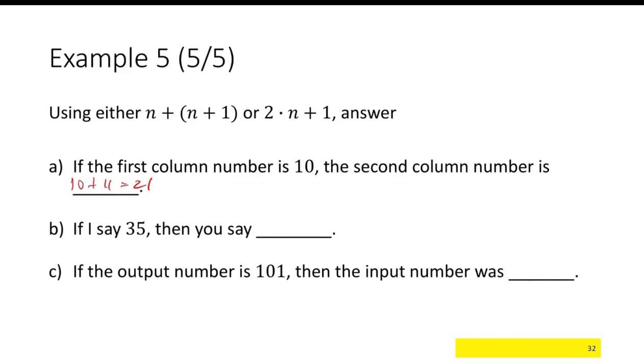If I try with the second one, if I say 35, then 2 times 35 would be 70 plus 1 or 71. If the output is 101, the input would be 101 plus 102, so 203.